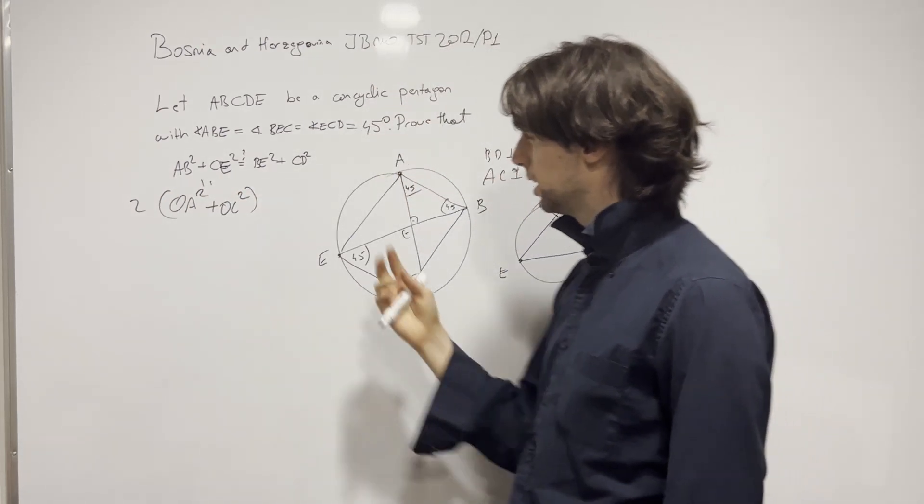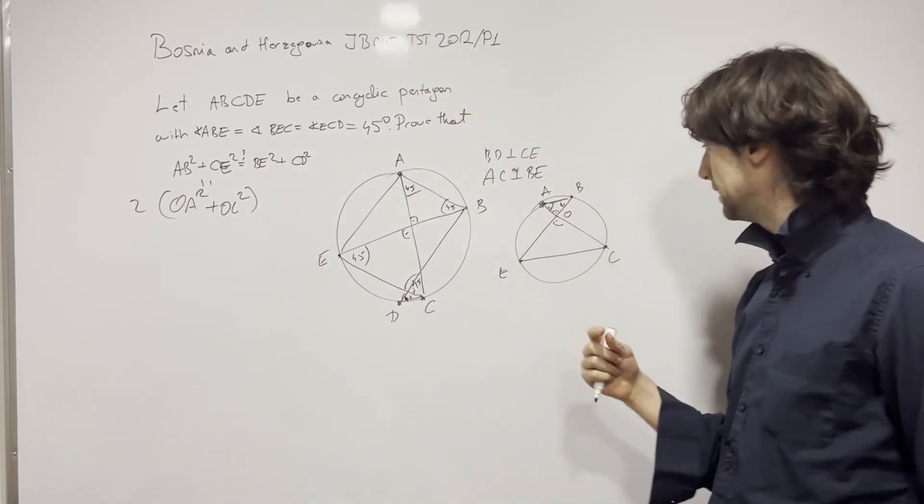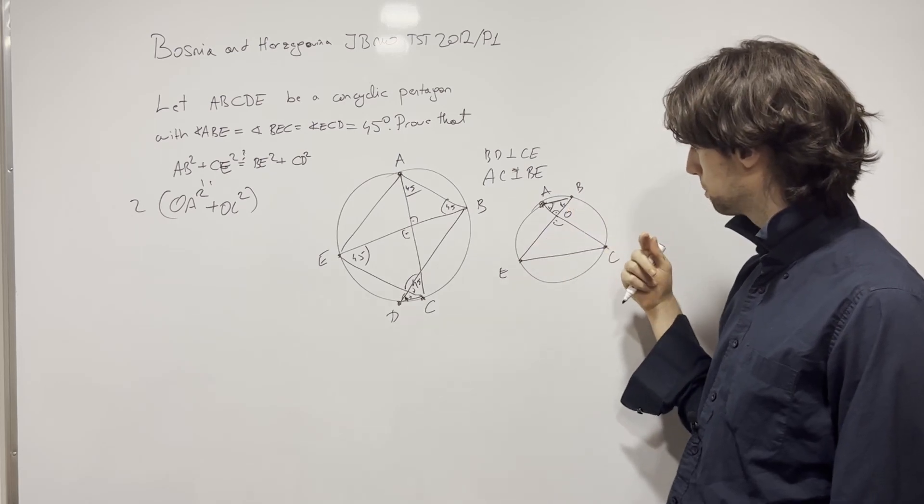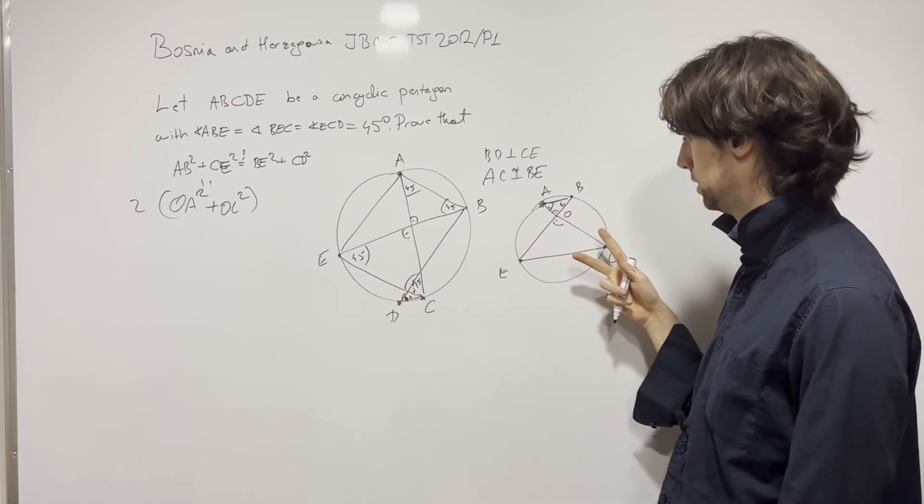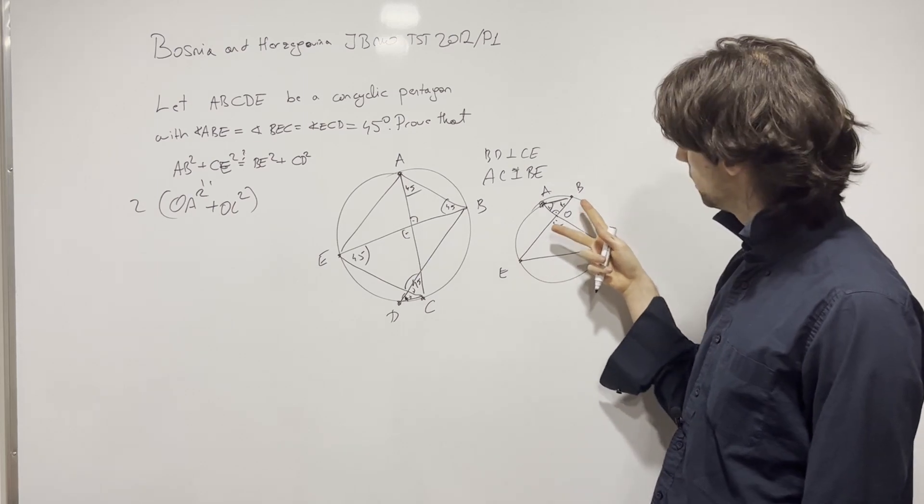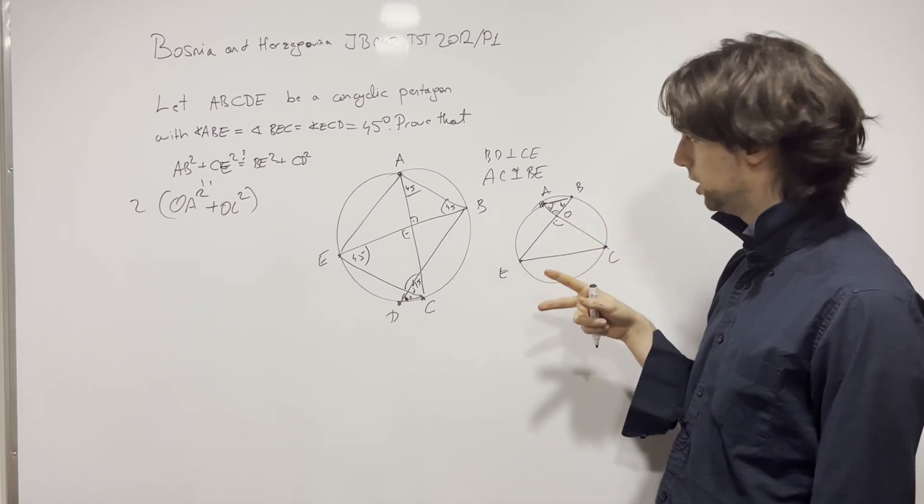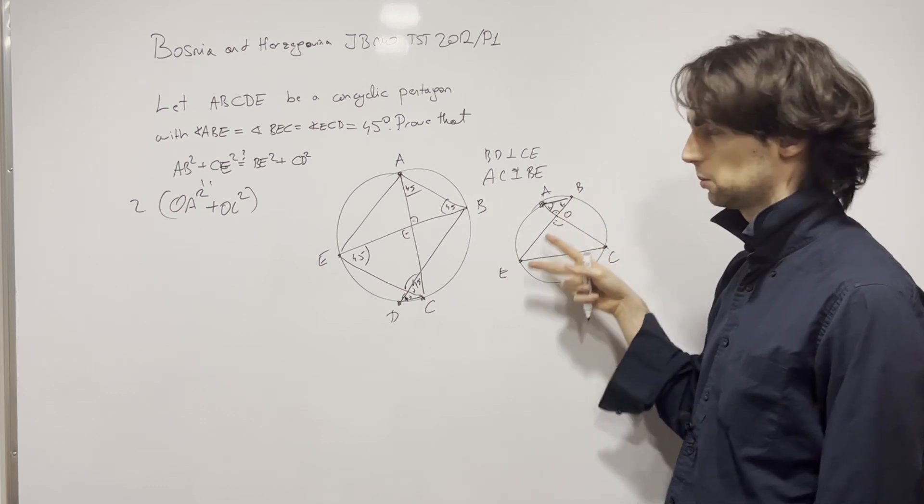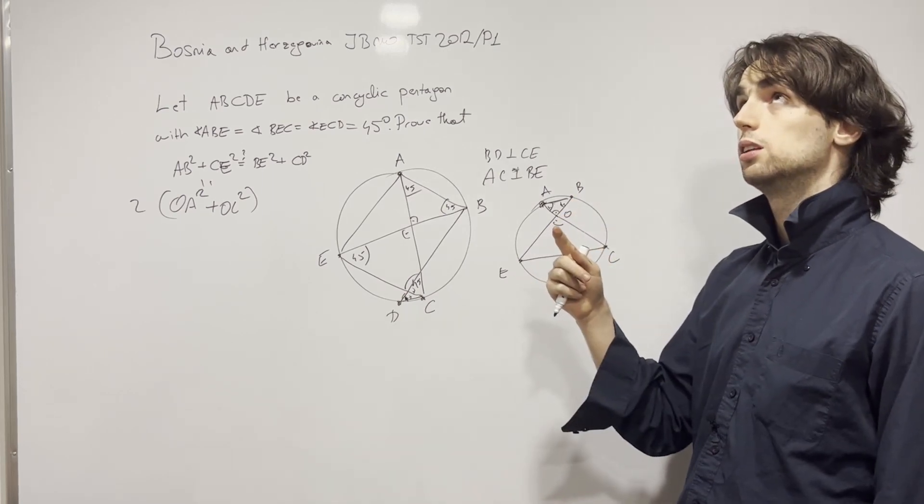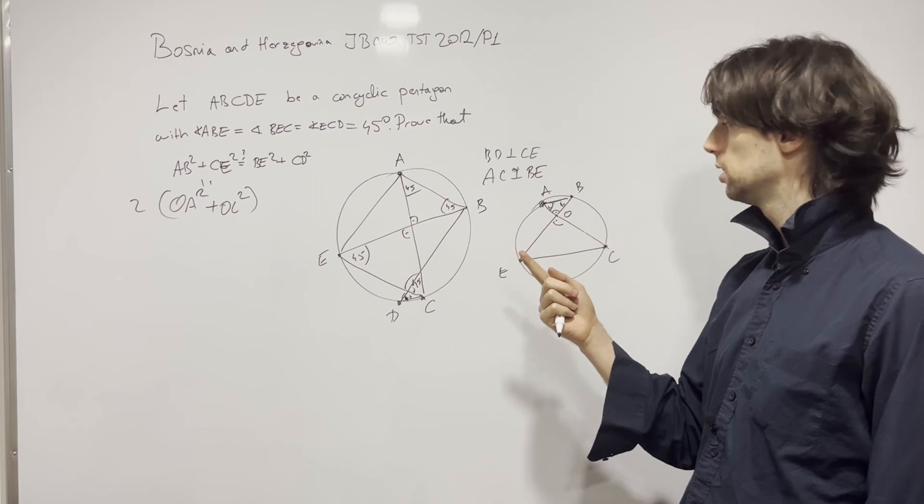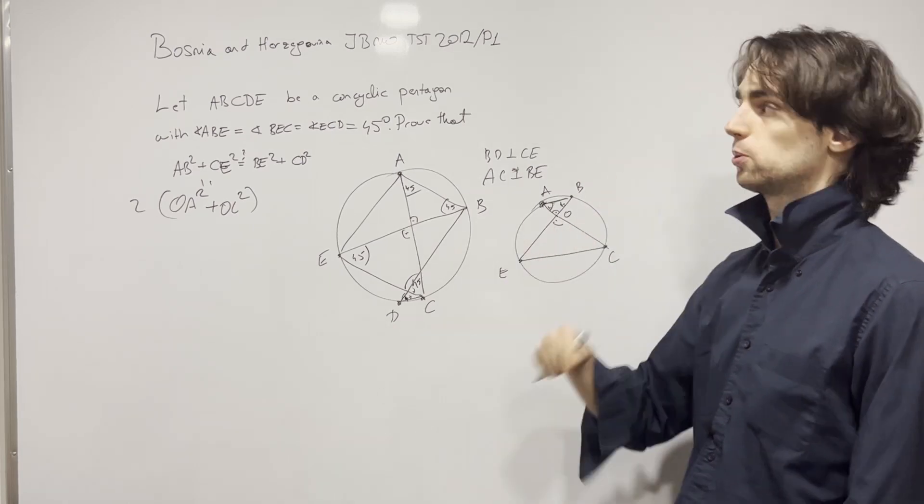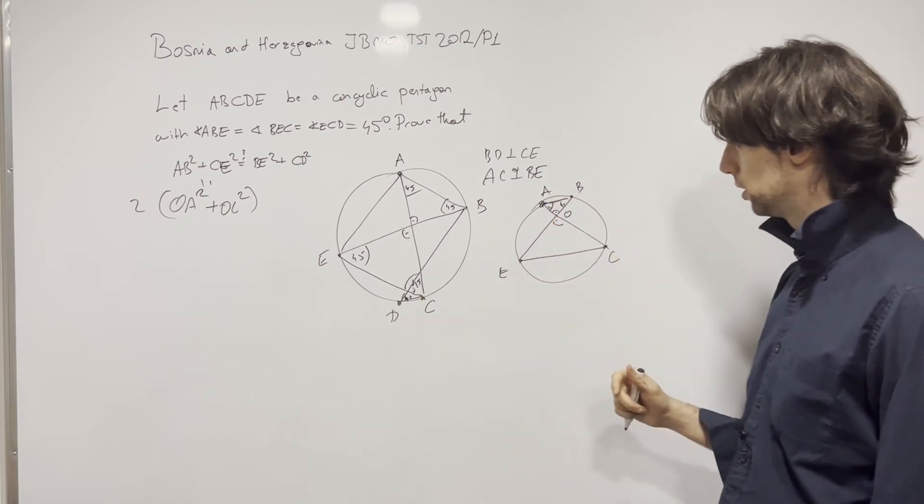We know this is the case. Now, BE squared plus CD squared. So BE squared plus CD squared is not what we need. And BE squared is actually interesting because that has this squared and this squared. And is that okay? X plus Y squared is greater than or equal to X squared plus Y squared. So it's strictly greater than that, so we're good.